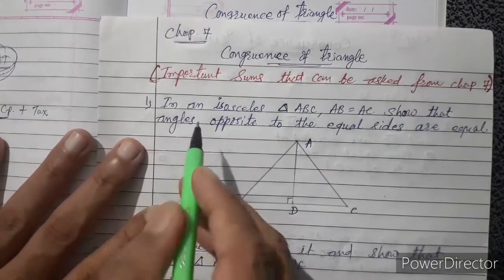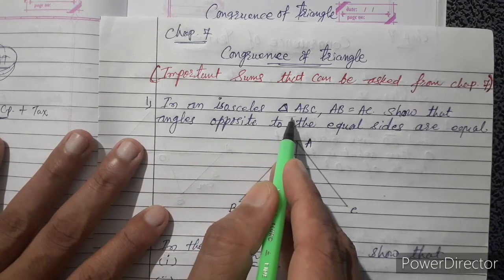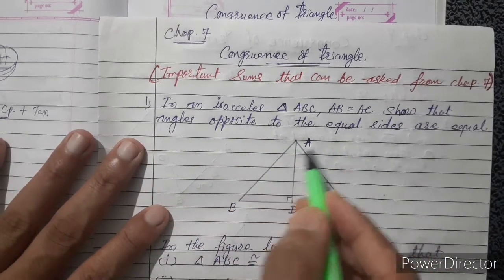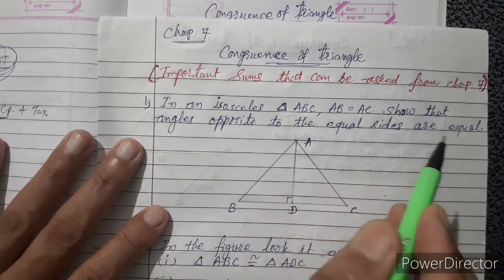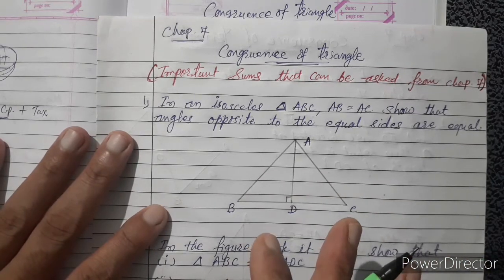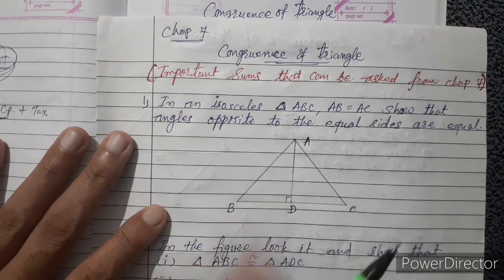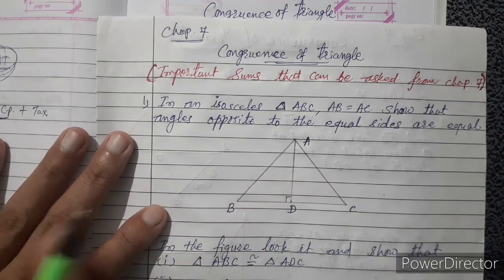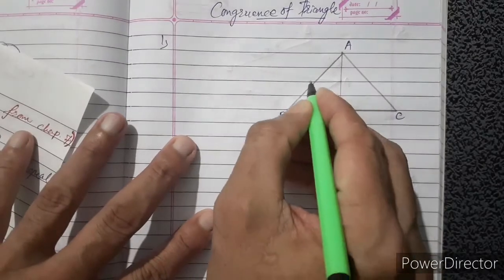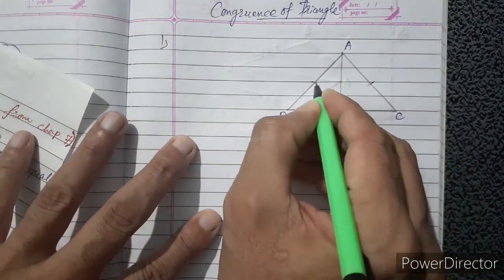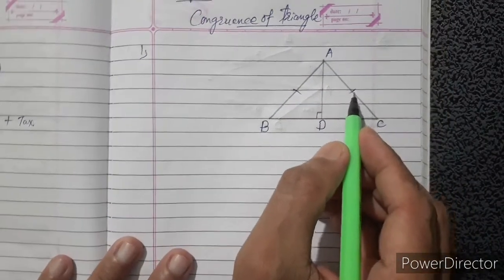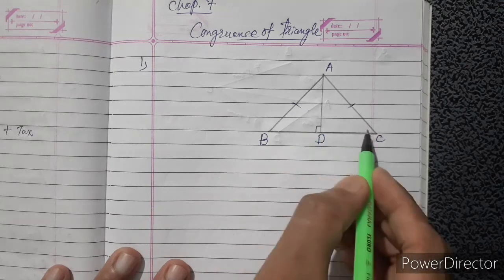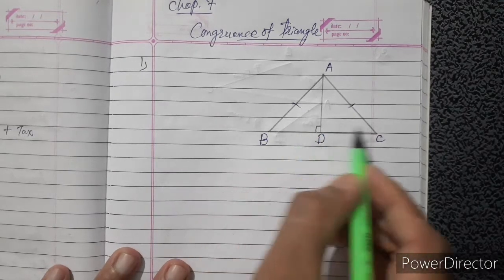In the first problem, in an isosceles triangle ABC, AB equals AC. We need to show that the angles opposite to the equal sides are equal. An isosceles triangle means two sides are equal. AB and AC are the two equal sides, so we just prove that the opposite angles B and C are equal.